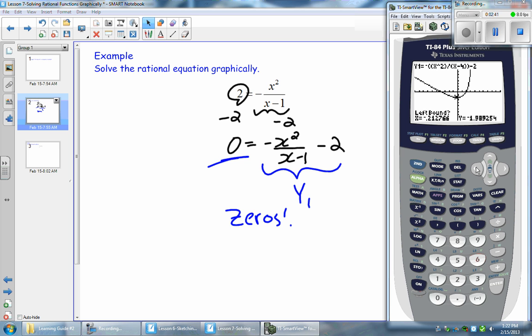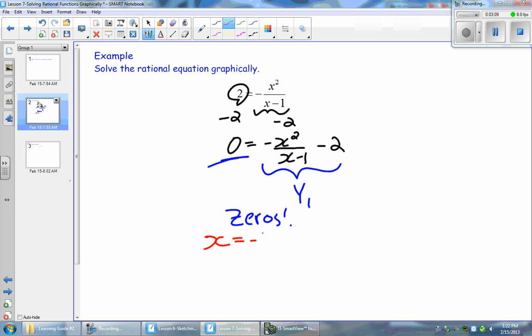We're going to find the first point of intersection on the left here. So get on the left of that point of intersection and you're going to press Enter. And it's going to ask you for a right bound. So get on the right bound of that point of intersection and press Enter again. And Enter for a guess. And therefore we have a 0 at x is equal to negative 4. So that's one of the solutions that I'm looking for. We have a solution at x is equal to negative 4.